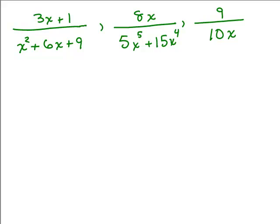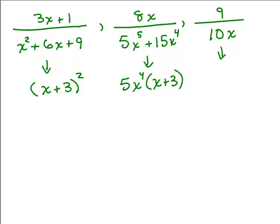Here's another example. Keep in mind that on all of these, I'm not paying attention to the numerator — all I'm trying to decide is what the least common denominator of the three algebraic fractions is. All we're doing is factoring the denominators. For the first one, x squared plus 6x plus 9 is a perfect square, so that's x plus 3 squared. Next, we take out the greatest common factor, which is 5x to the 4th, giving x plus 3. And the last one we've got 10x, which I could also write as 2 times 5 times x.